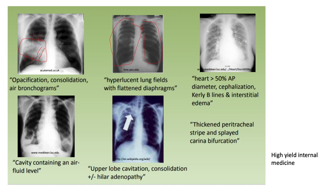A classic picture of heart failure includes a heart more than 50% of the AP diameter, cephalization — upper zone diversion of pulmonary vessels — and curly B lines speaking to interstitial oedema or lymphatic congestion. This is a classic setting of left ventricular failure. A cavity containing an air-fluid level is a lung abscess; these patients often have clubbing and halitosis. Upper lobe cavitation and consolidation with or without hilar lymphadenopathy is the classic picture of pulmonary TB.